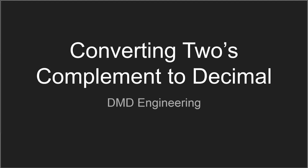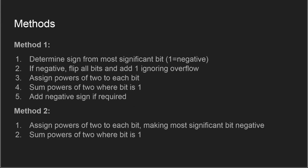In this video, I'm going to be showing how to convert binary numbers represented in two's complement to decimal. I'm going to show two slightly different methods for doing this and go through a few examples showing both methods. Method one has five steps, method two only has two steps. I'll walk through the steps here and then we'll see how they get used as we go through the examples.